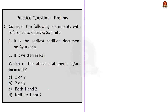The second question considers statements with reference to Charaka Samhita. First statement: it is the earliest codified document on Ayurveda — this is correct. Second statement: it is written in Pali — this is incorrect because it has been written in Sanskrit. The Charaka Samhita is a Sanskrit text. The question asks for the incorrect statement, so the correct answer is option B, two only.